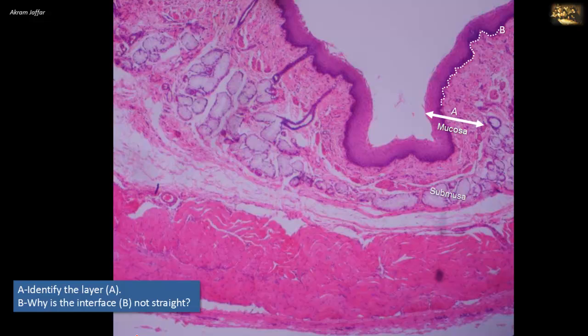The inner layer, marked A, is the mucosa. As you can see here, it consists of three parts: epithelium, lamina propria, and a thin layer of smooth muscle fibers called the muscularis mucosa. The epithelium in this section is stratified squamous epithelium, non-keratinized.